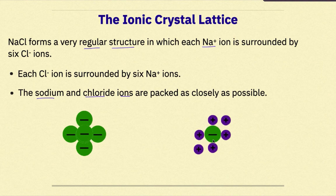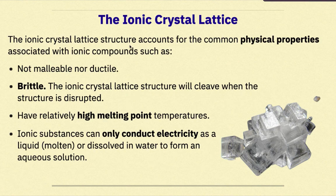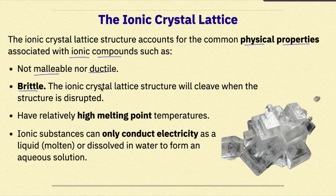Since this is a 3-dimensional representation, there is also a chloride ion in front and behind the sodium ion. Similarly, the chloride ion with an overall charge of -1 has 4 sodium ions surrounding it, one on each side, plus one sodium ion in front and one behind. The ionic crystal lattice structure accounts for common physical properties: ionic compounds are not malleable nor ductile — you cannot pound them into a thin sheet or draw them into a wire. Ionic compounds are typically brittle and will cleave when the structure is disrupted.